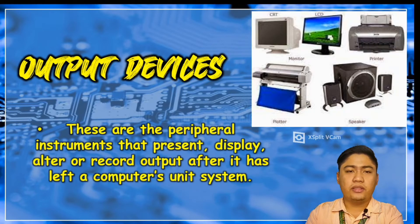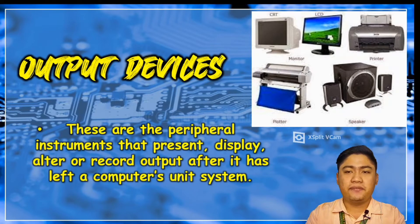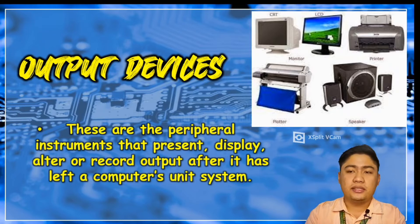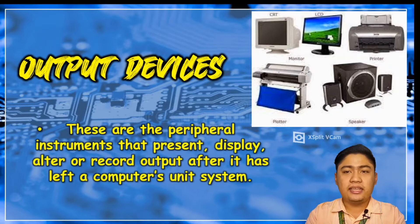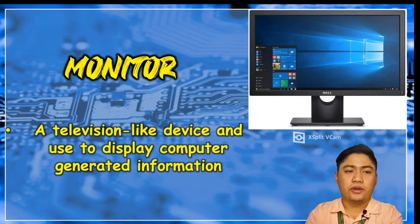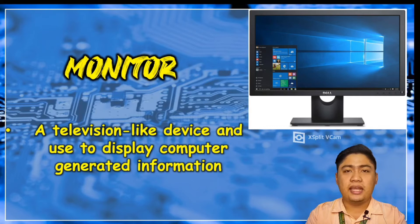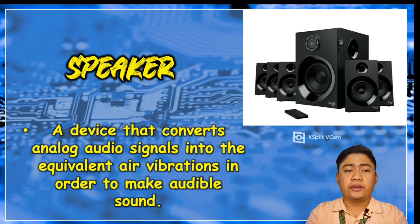Next we have the different basic output devices. Output devices are devices that present, display, alter, or record output after it has left a computer's system. When the computer completes a computation, the resulting data is sent out to an output device. The monitor is a television-like device used to display computer-generated information.